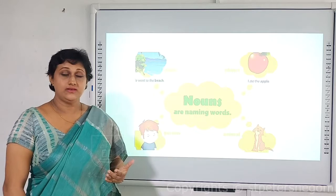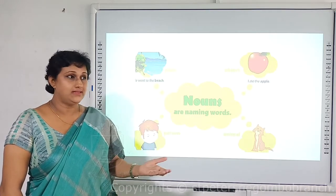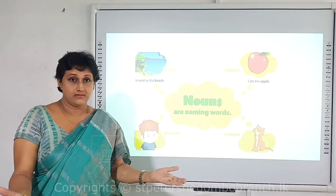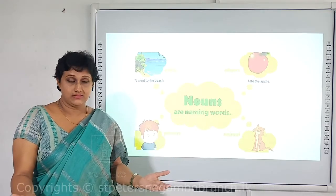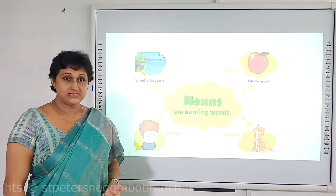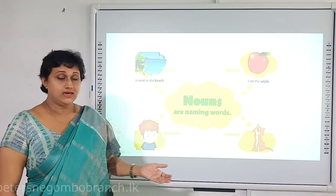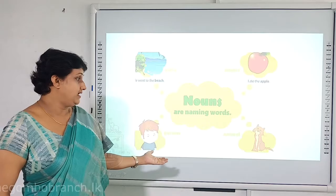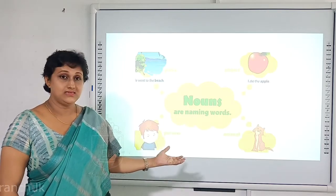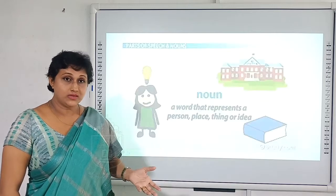The first word class is nouns. A noun is a naming word — you give a name to a particular thing or object. A name of a place, a name of a person, a name of an object, and a name of an animal can all be taken as nouns. So nouns are basically naming words.